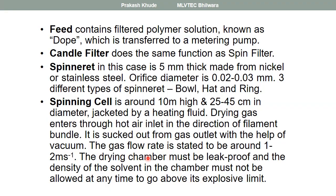The dope solution is the solution where the polymer has been dissolved with a suitable solvent. It is filtered and passed through the metering pump, which regulates the flow rate. The candle filter performs the same filtering function as in melt spinning. The spinneret is a 5 mm thick plate made of nickel or stainless steel, with orifice diameters of 0.02 to 0.03 mm.